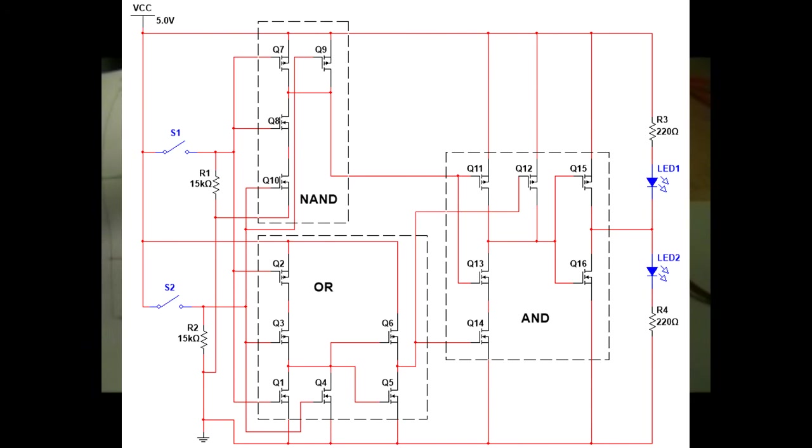So in that case, if either switch is off, you're going to get an output. So that is our NAND gate.